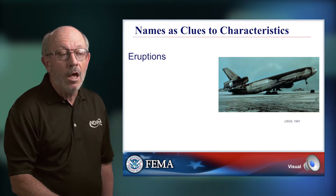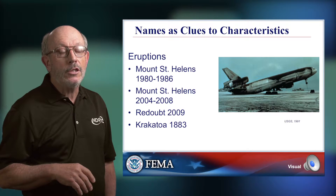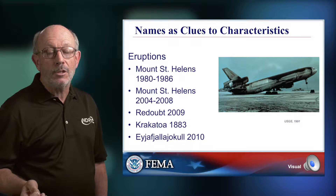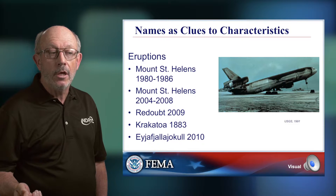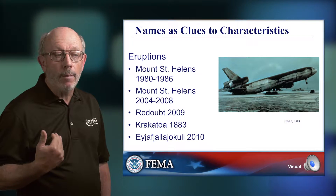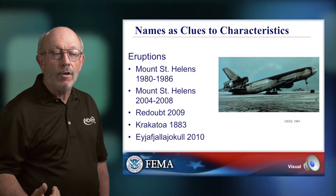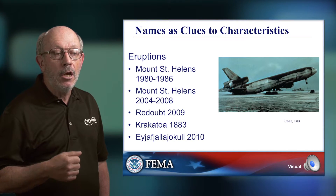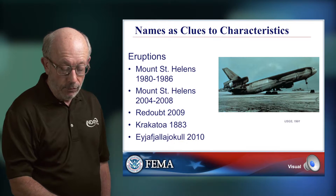Volcanic eruptions are the simplest ones, though you could argue I'm biased. Again, it's geography and date, but the geography is now very specific — it's the source point, where the problem starts, not where the people are. And because some volcanoes erupt repeatedly, like Mount St. Helens, we have to have a year to distinguish one event from the other — from the great St. Helens eruption starting in 1980 to the smaller perturbation between 2004 and 2009.